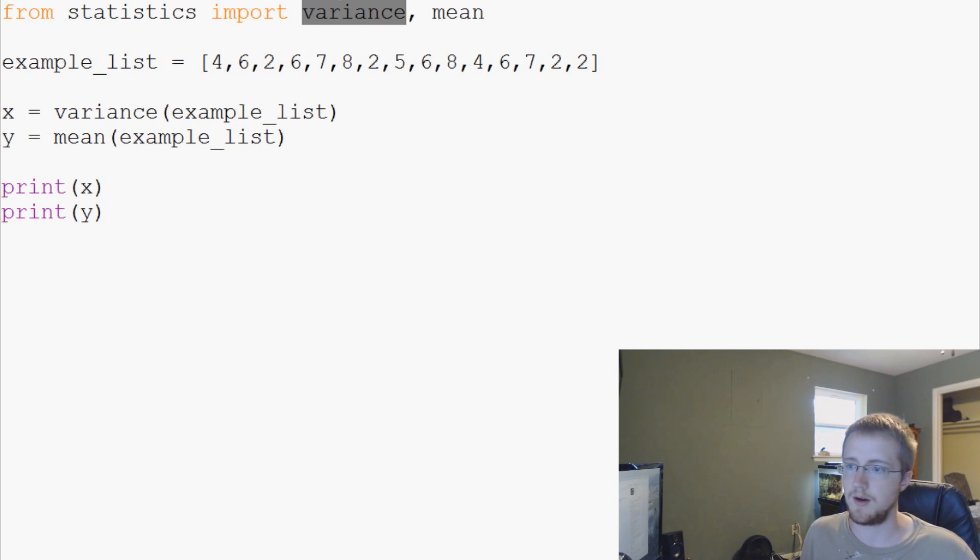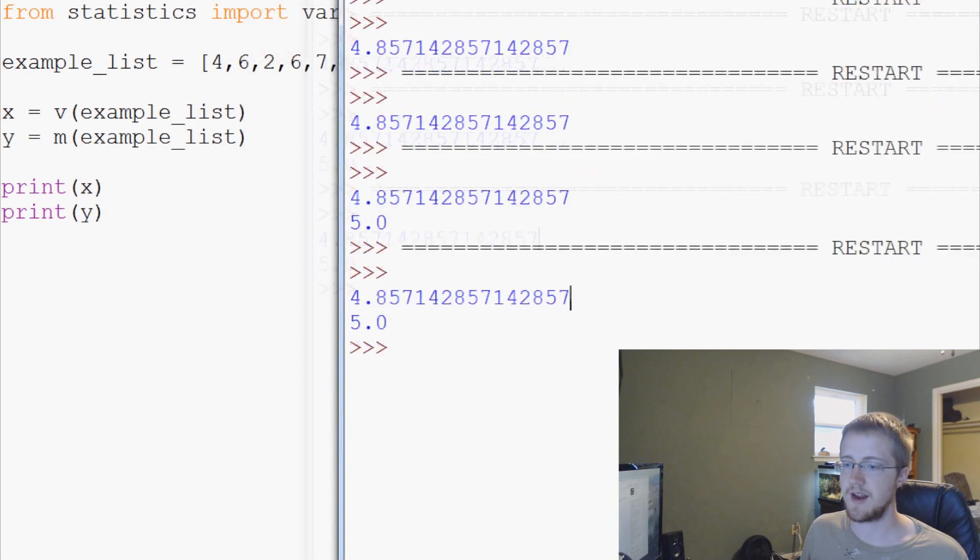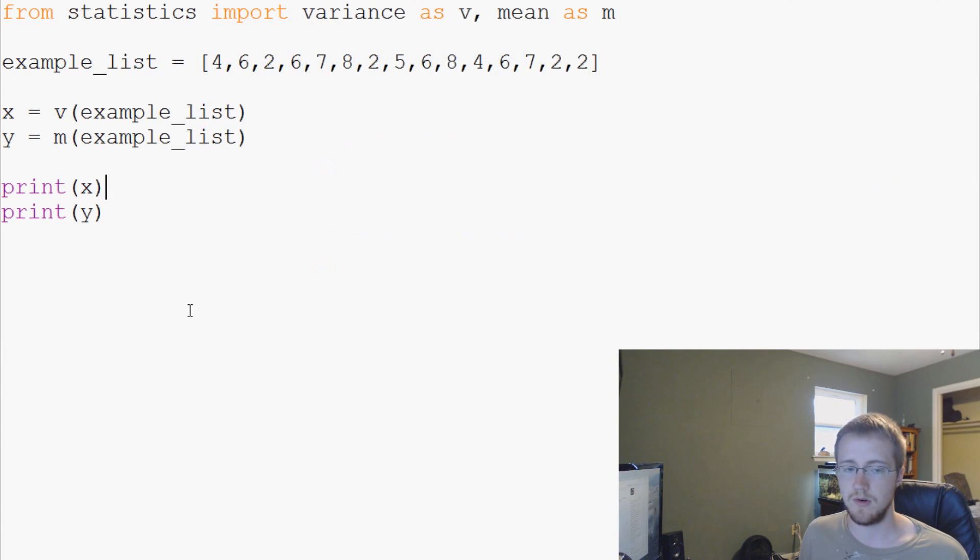So, but what if we don't want to type variance mean? Well we can do still like this: import variance as v, mean as m. So we can change this to v, change this to m, and everything works as we hope.